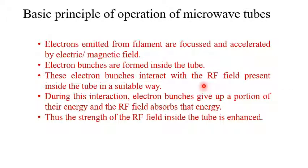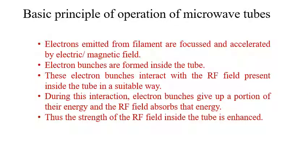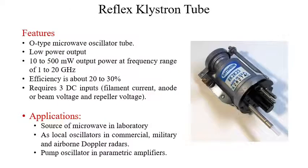Depending on the various structures, the bunch formation and electron interaction are completely different. For each tube, we have a different kind of electron bunch formation and different kind of energy interaction. That is why we have different types of tubes. We are going to discuss a few of them. First, consider the reflex klystron tube.